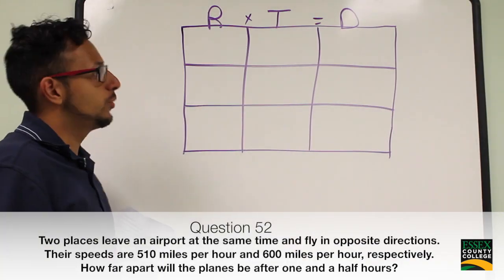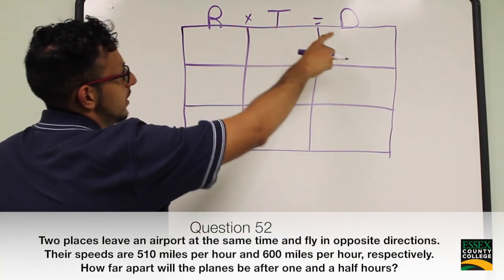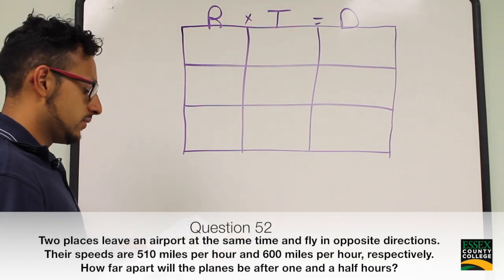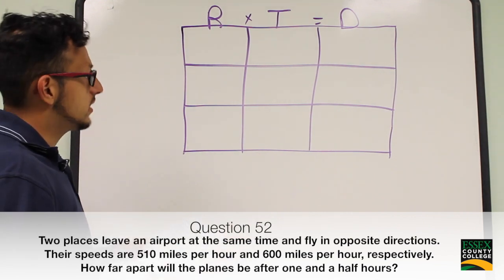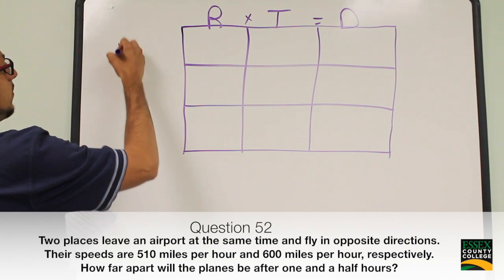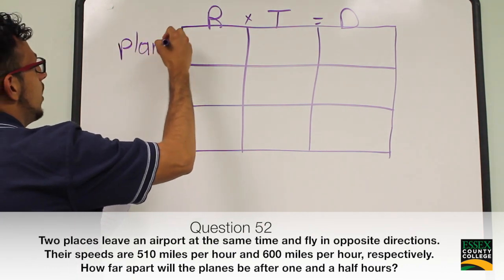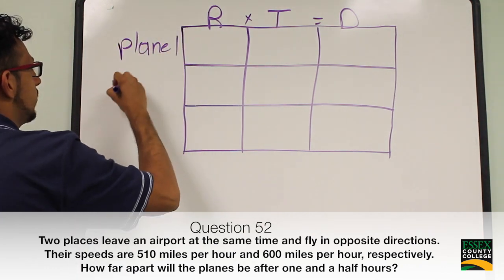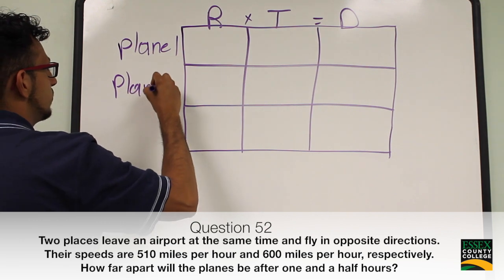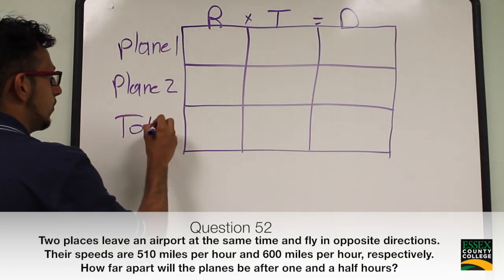For this problem we can draw a chart because we have a rate times time equals distance problem. They gave us the rate and the time, and we have to look for distance. This could be labeled as plane 1, plane 2, and total.